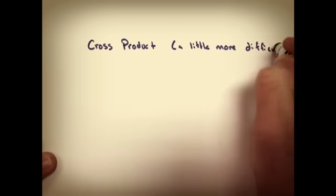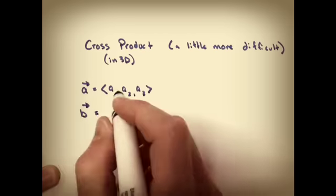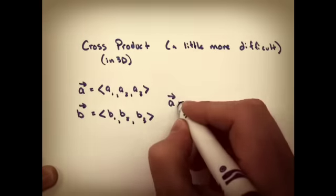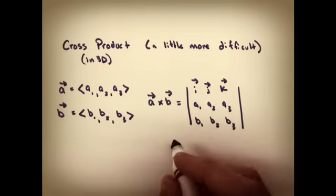On to the cross product, a little tougher. You're going to have to remember something about matrices. We do it always in three dimensions, so I define my two vectors, and the cross product is the determinant of this 3x3 vector.